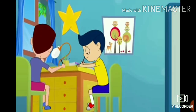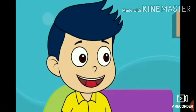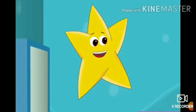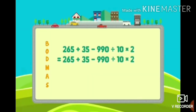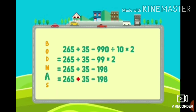Always keep in mind when solving problems with basic fundamental operations, use the BODMAS rule: first Bracket, next Of, Division, Multiplication, Addition, and Subtraction. See this problem: first Division, next Multiplication, then Addition, and finally Subtraction. The answer: 4300 minus 198. The answer is 102.